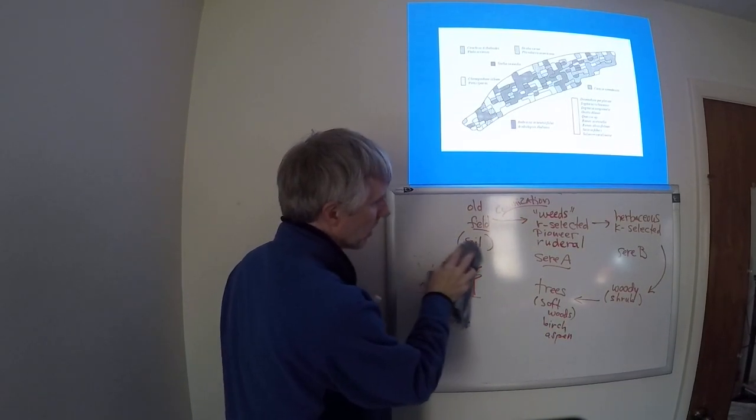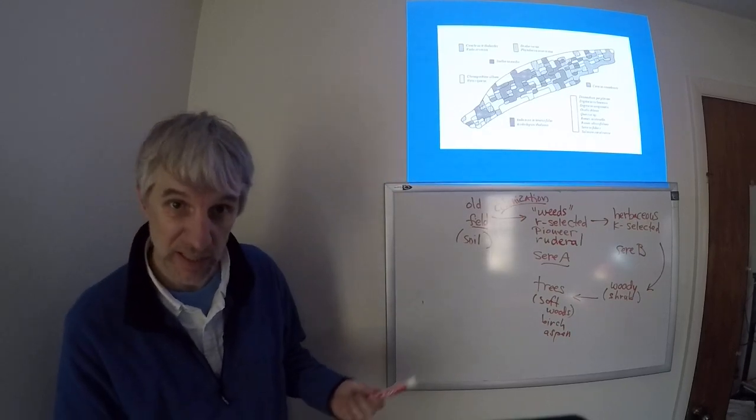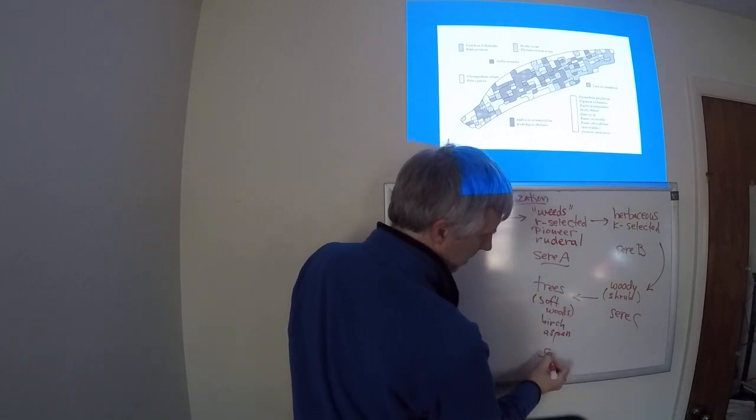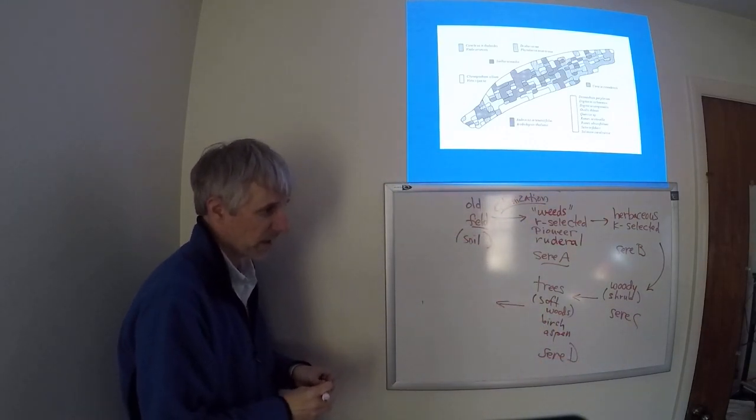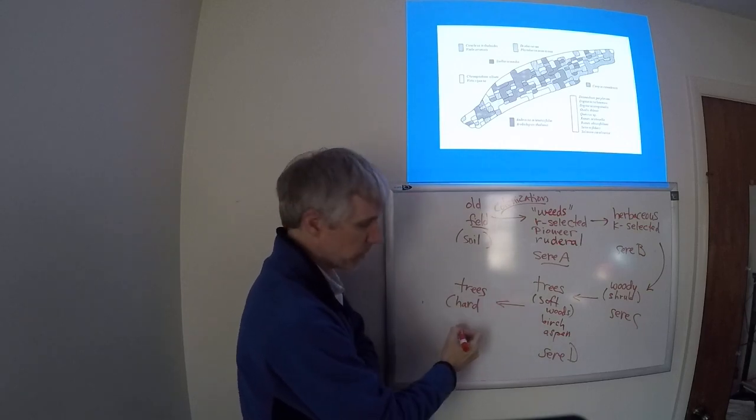So the next set of species to move in, or the next sere, I should label this as sere C and sere D, the next set of species to move in are also trees, but these fall under the category of hardwoods.